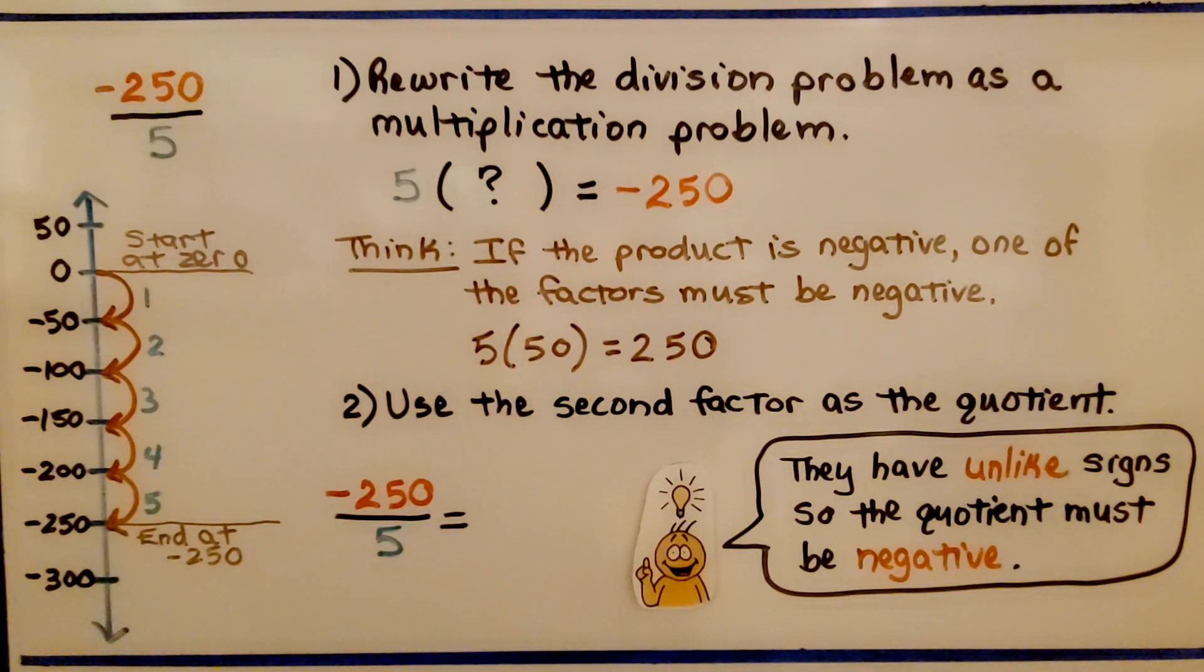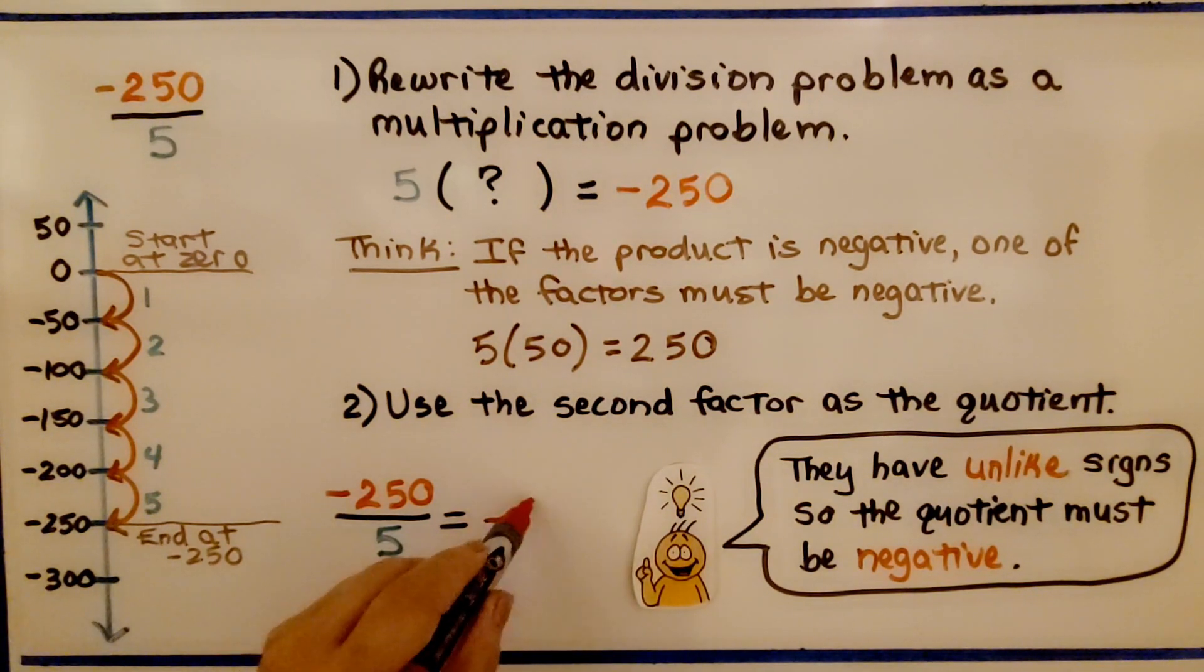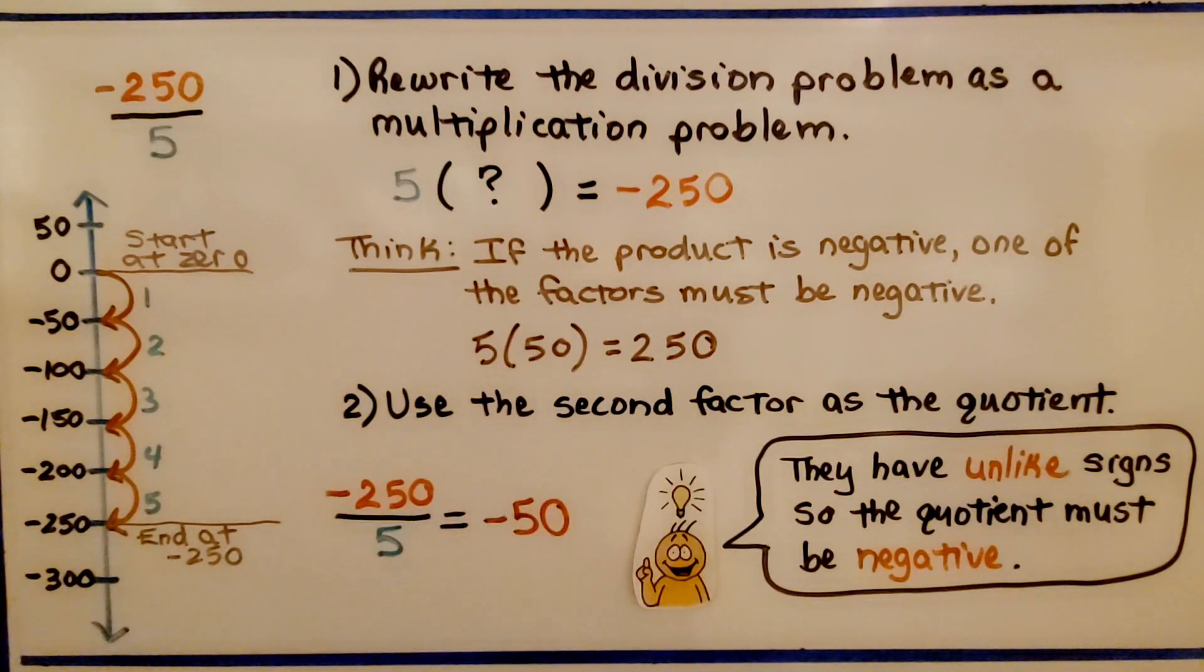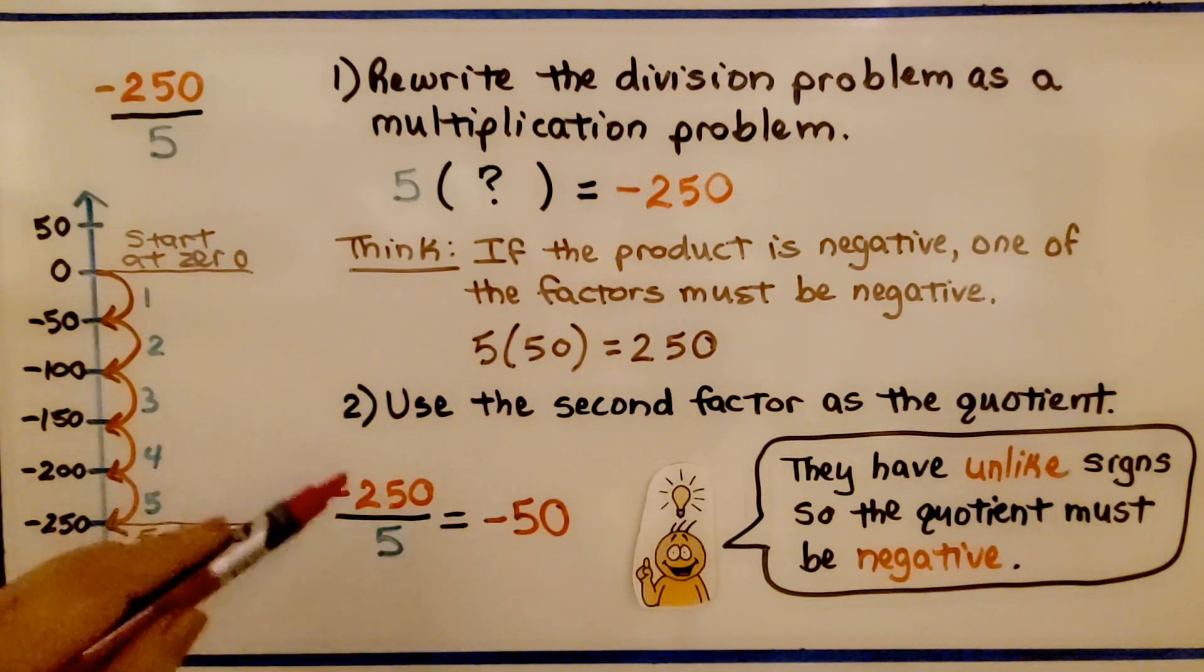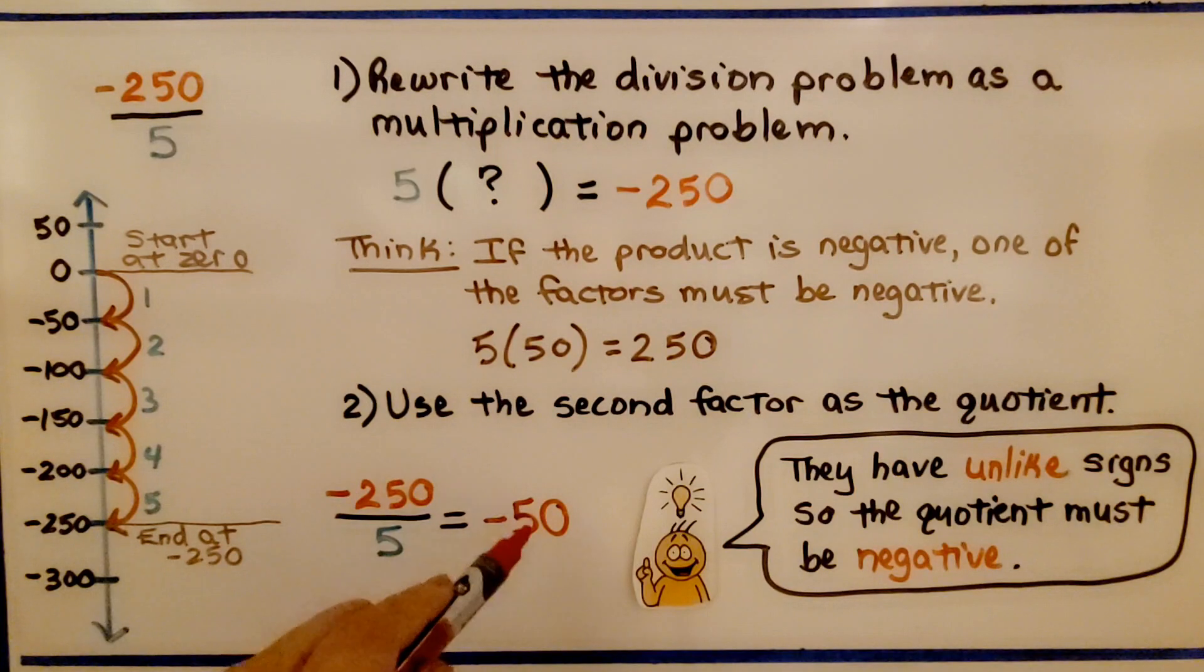We think, if the product is negative, one of the factors must be negative. It must be negative 50. They have unlike signs, so the quotient must be negative.